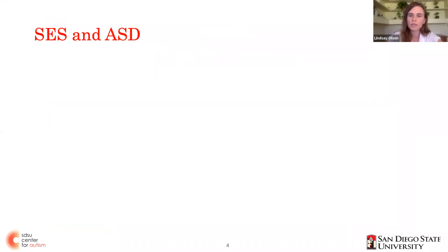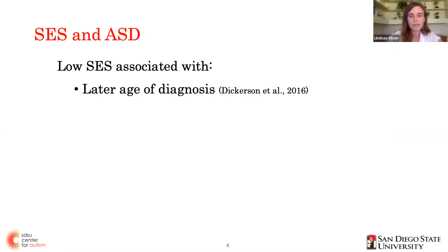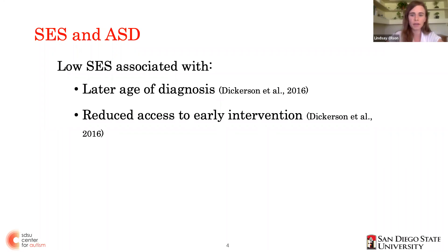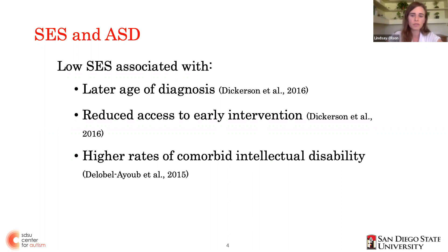Although there's growing literature providing compelling evidence for associations between SES and language development in early childhood, much less is known regarding how SES relates to language in young children with neurodevelopmental disorders such as ASD. However, it's been shown that in ASD, lower SES is associated with later age of diagnosis. And further, barriers to accessing health care associated with lower SES could also lead to reduced access to early intervention for young children with ASD from lower SES households. Children with ASD from lower SES households are also more likely to receive a diagnosis of comorbid intellectual disability than their mid to high SES peers.